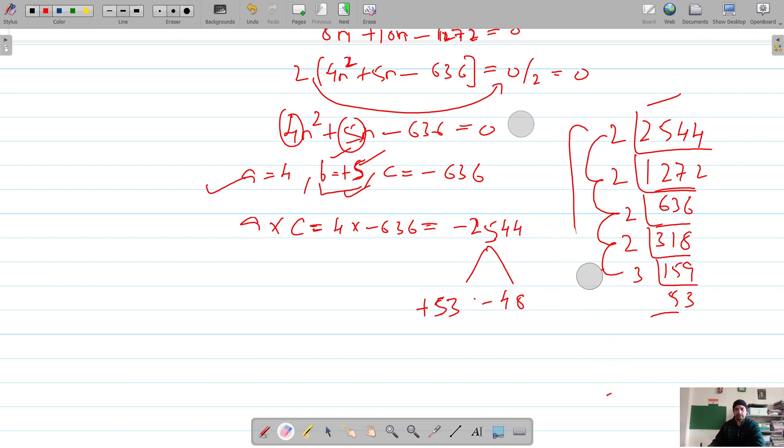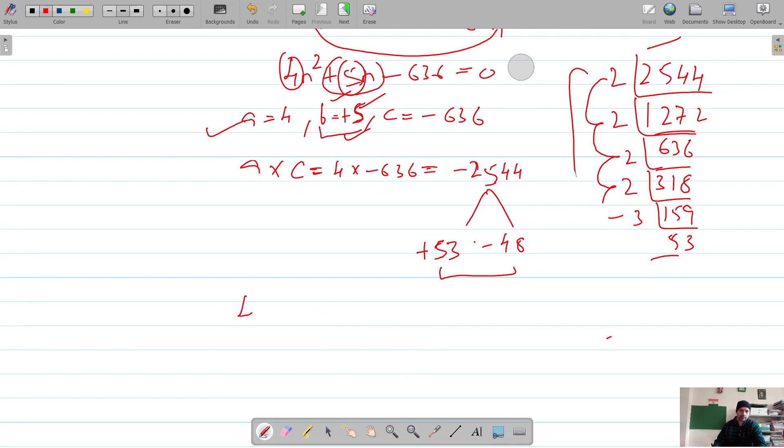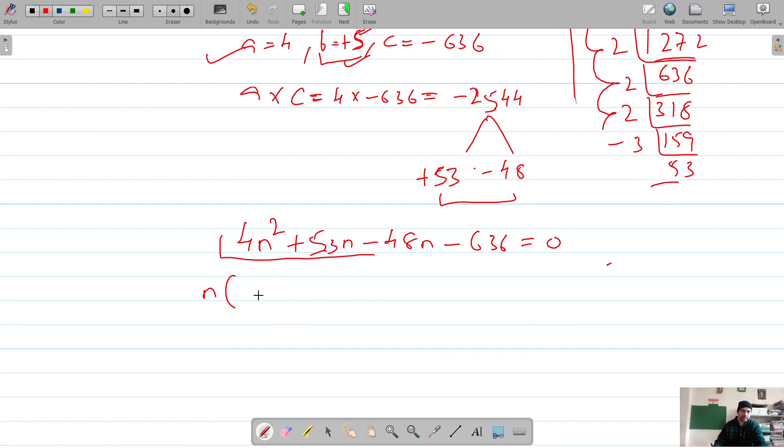So I'm going to split this middle term into these two factors. So 4n square plus 53n minus 48n minus 636 equals 0. So for these, the common is n, and this gives me 4n plus 53. And for these, the common is minus 12. So it's 4n plus 53 because I have minus outside. So 12 and it's 53.